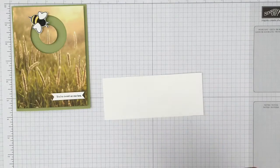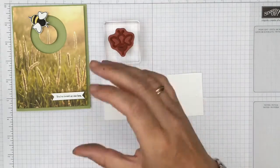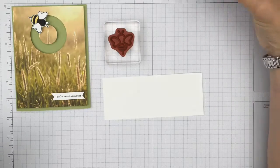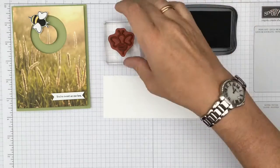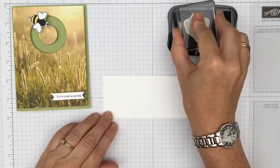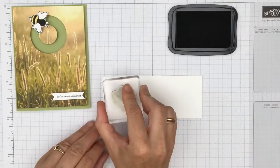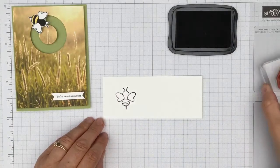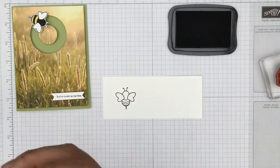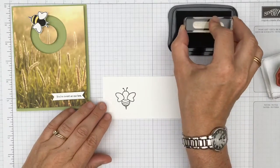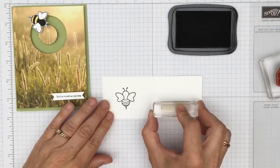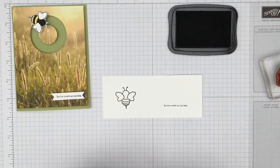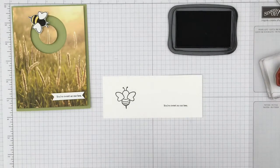First of all, we're going to do the stamping. I'm going to stamp out the butterfly—he's not a butterfly, is he at all? He's a little bumblebee. How could I get that mixed up? We're going to stamp out the little bumblebee and the sentiment as well. I'm using You're As Sweet As Can Be.